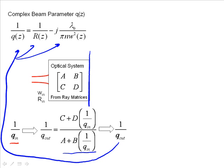And so this is really a very powerful technique and just involves calculating the input q, running it through the equation, breaking the resultant output q into its real and imaginary parts, and then doing some simple algebra to get the radius and the waist from that.